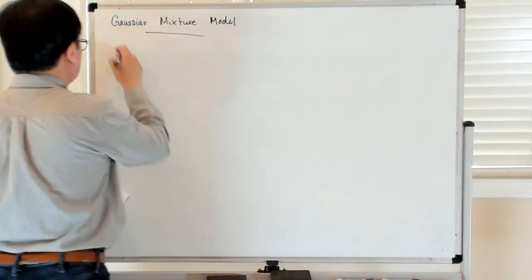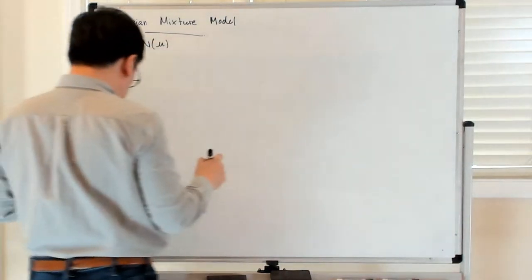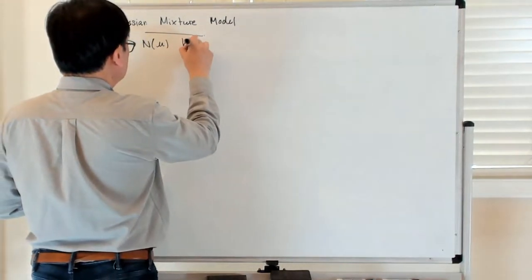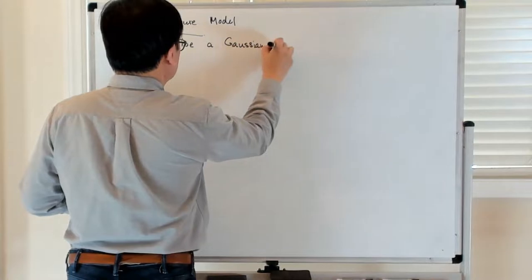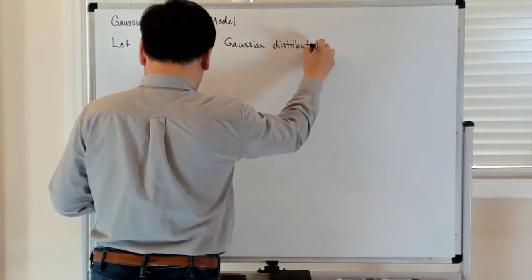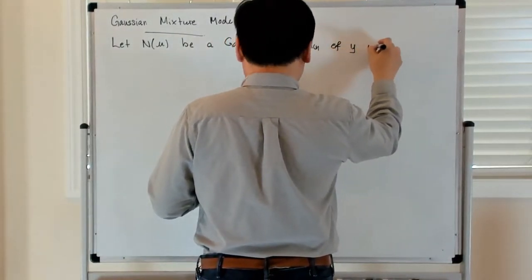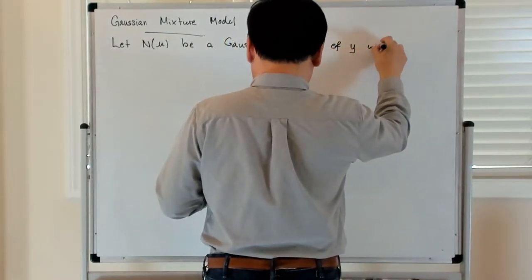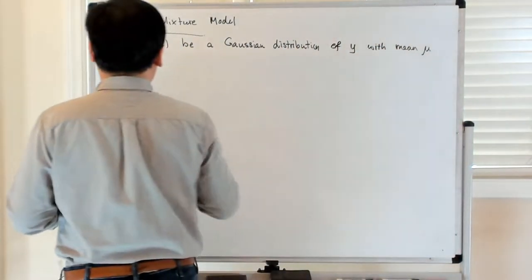So let's say we have N(μ) be a Gaussian distribution of y with mean μ and variance 1.